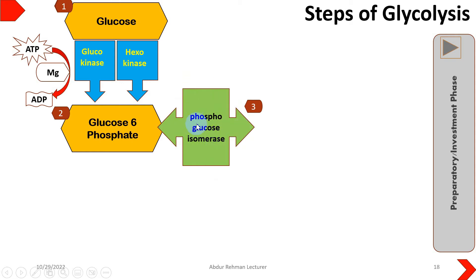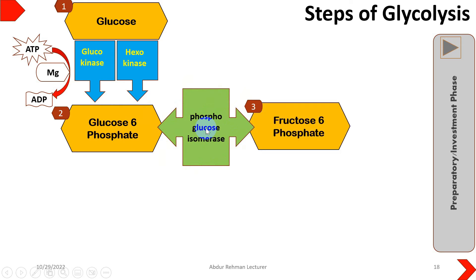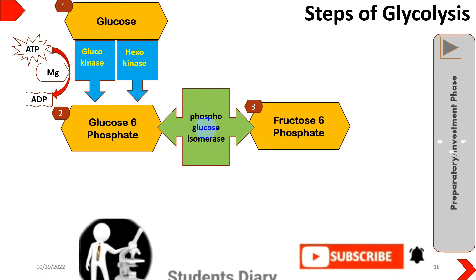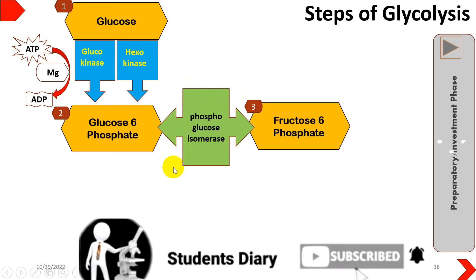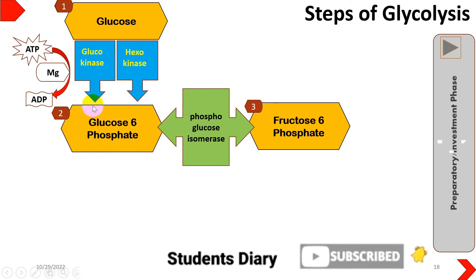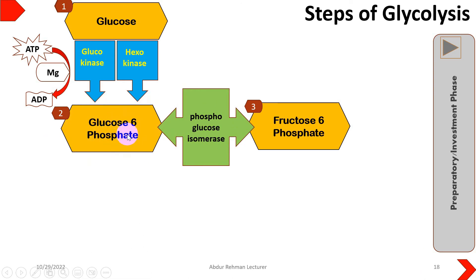With the help of phosphoglucose isomerase, glucose 6-phosphate will be converted into fructose 6-phosphate. This is basically a rearrangement step, where glucose 6-phosphate, which is an aldohexose, will be converted into a ketohexose.